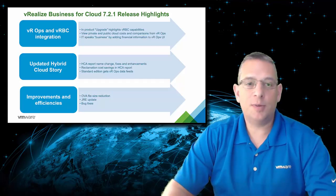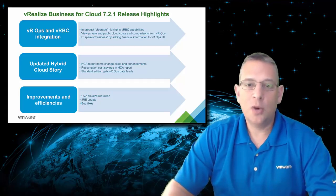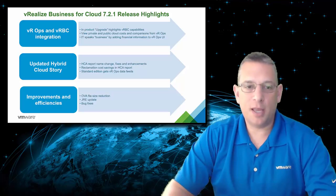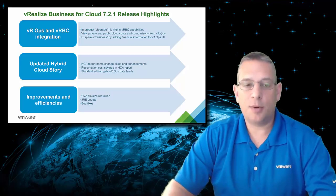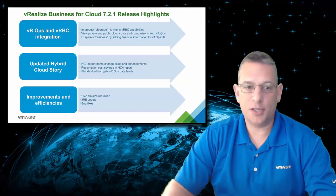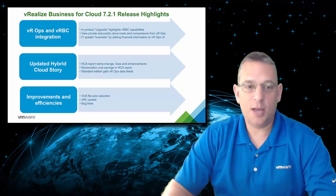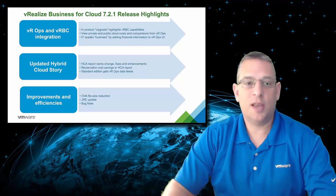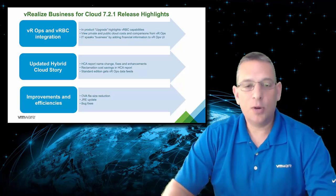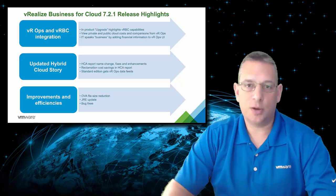In the new VRealize Business for Cloud, or VRBC as I'm going to call it, we can sum up the improvements into three main categories: the VRealize Operations Manager and VRealize Business for Cloud integration, updated hybrid cloud story, and improvements and efficiencies. I will get into more detail in each one of these as we go through each one of the categories in the upcoming slides.